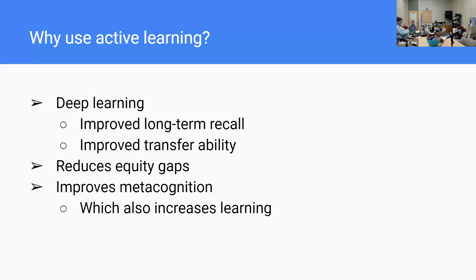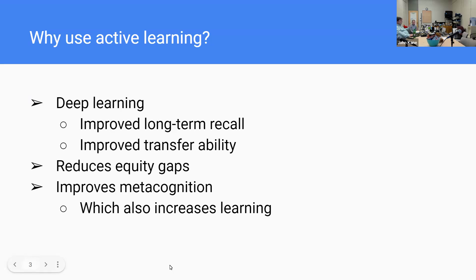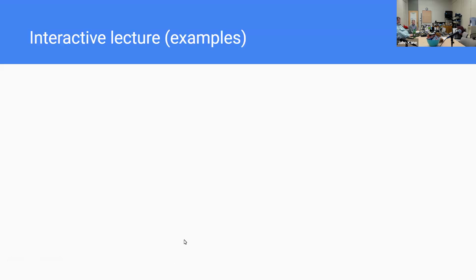It's really important to sell students on active learning, because in many studies, when students are asked what they think is more effective, they think it's more effective to listen to a lecture from a professor who's an expert on the topic. They feel they're being cheated when active learning is used instead, saying on course evaluations, 'we had to do all the work, we had to do all the learning ourselves.' It's important to explain to them that this is for them, and sharing the research with them is helpful too.